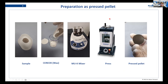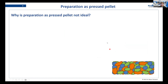How do we prepare a pressed pellet in detail? You have your sample that was ground before and you will have some kind of binder — in this case, Cereox, which is our wax binder. These two components are mixed well and then pressed, and then you obtain the pressed pellet. This whole process is quite easy to do and it is fast. But why is this preparation sometimes not ideal? You might get some surprising results in your measurements.